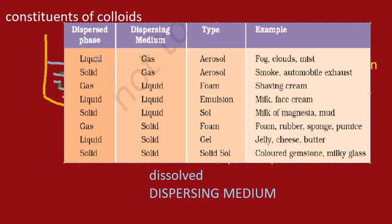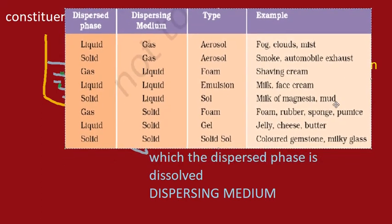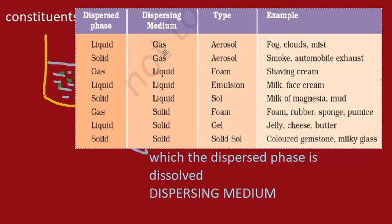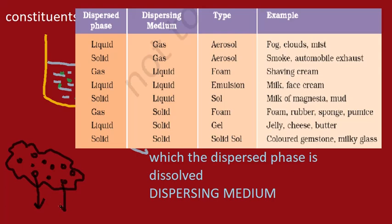When the dispersed phase is a liquid and the dispersing medium is a gas, the type of colloid is called an aerosol. Fog, clouds, and mist belong to this category. Clouds are small droplets of water suspended in the air. These droplets gradually join with each other, become heavy, and when they are too heavy for the air to hold them up, they come down in the form of rain.